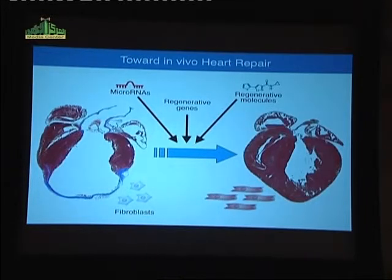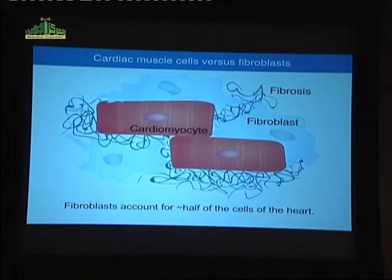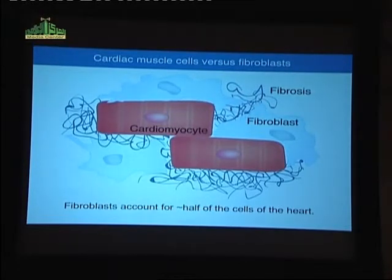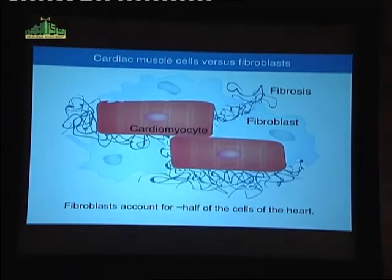In the last few minutes, I'd like to tell you about a complementary strategy: to reprogram the fate of fibroblasts — which would otherwise form a scar — into new cardiac muscle cells. While cardiac muscle cells are the primary cell type of the heart, roughly half of the cells of the heart are not cardiac muscle cells but are instead fibroblasts, which serve as interstitial cells linking cardiac muscle cells and other cell types, and also serving as signaling centers. In response to injury, when myocytes are lost, the fibroblast population becomes activated and forms the fibrotic scar.